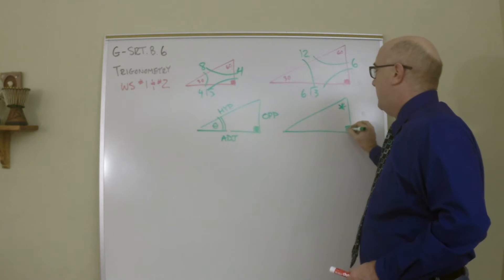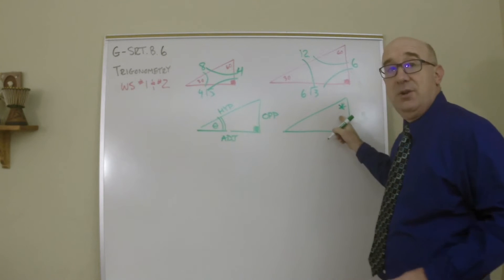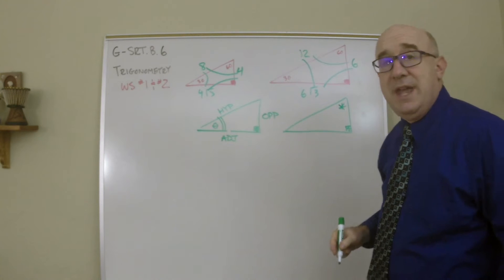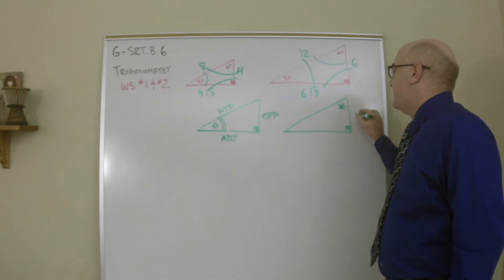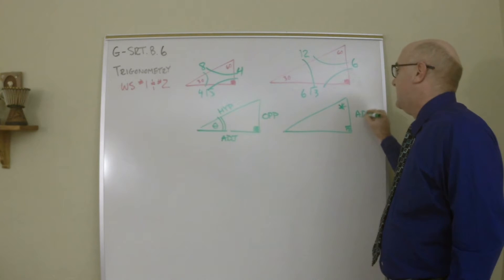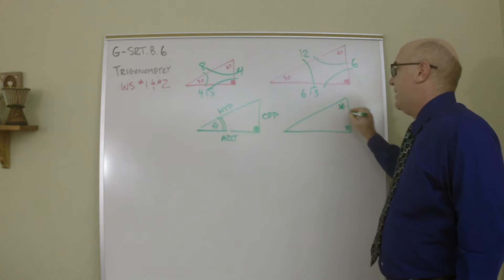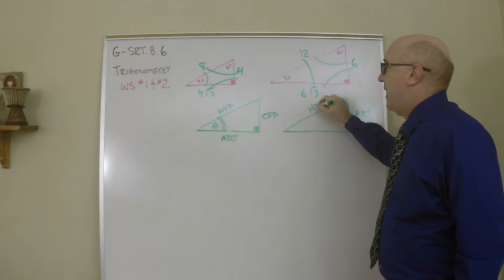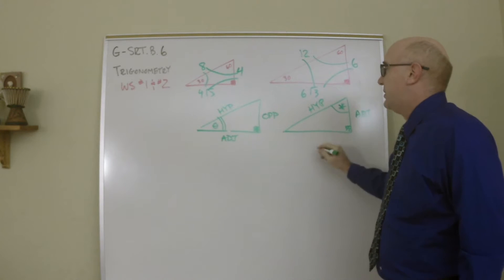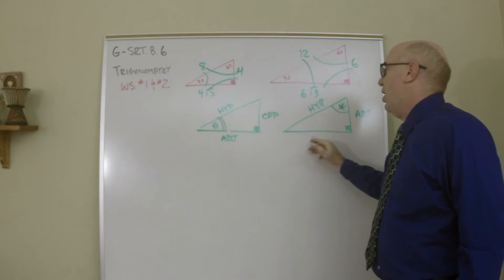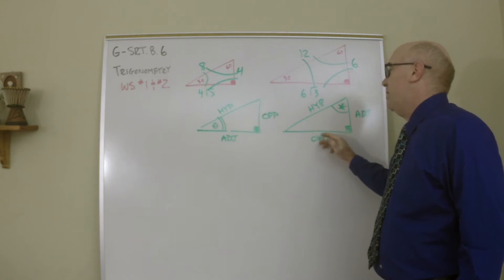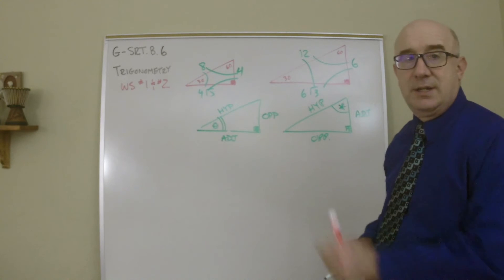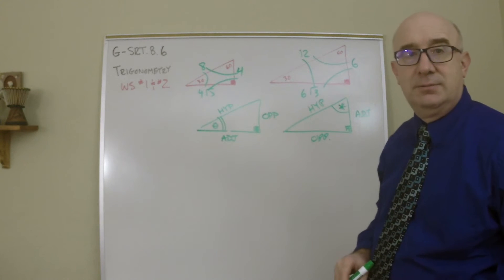Just to show you this idea: if the angle we were talking about is up here instead, we would then describe this side as the adjacent — it's beside the angle — this is still the hypotenuse, and then the opposite would be over here.